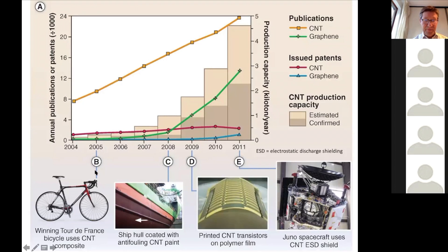In 2005... who won the tour in 2005? Does anybody know? But basically this bicycle contained carbon nanotube. It can be a very strong material. I think it was Lance Armstrong, by the way.